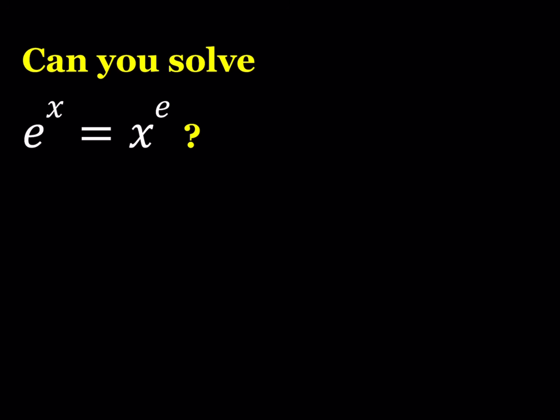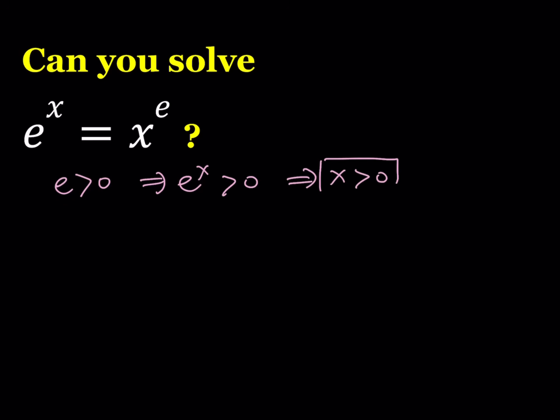I know at this point you probably have an obvious solution for this equation, but we're going to be solving it algebraically and we're going to be using a little bit of calculus as well. Let's see how this goes. First of all, notice that e is a positive number, greater than 0, so e to the power x is also going to be greater than 0, which implies that the x value we're looking for needs to be positive. So we don't really care about 0 or negative values because they're not going to satisfy our equation. So we're going to be looking for positive values for x.